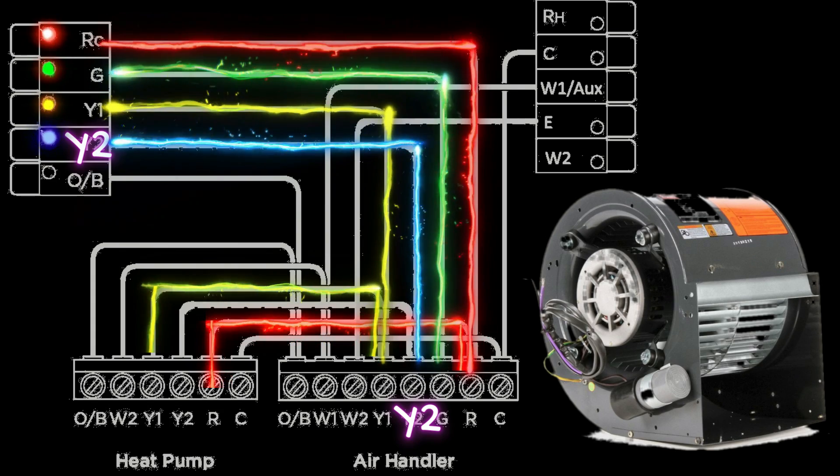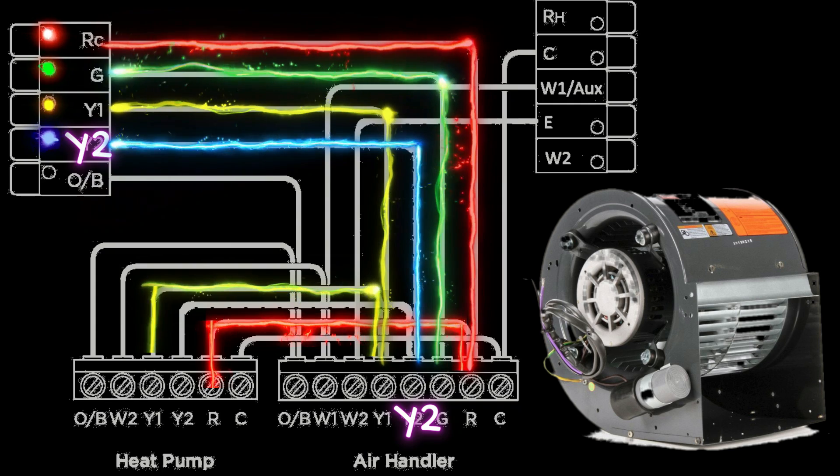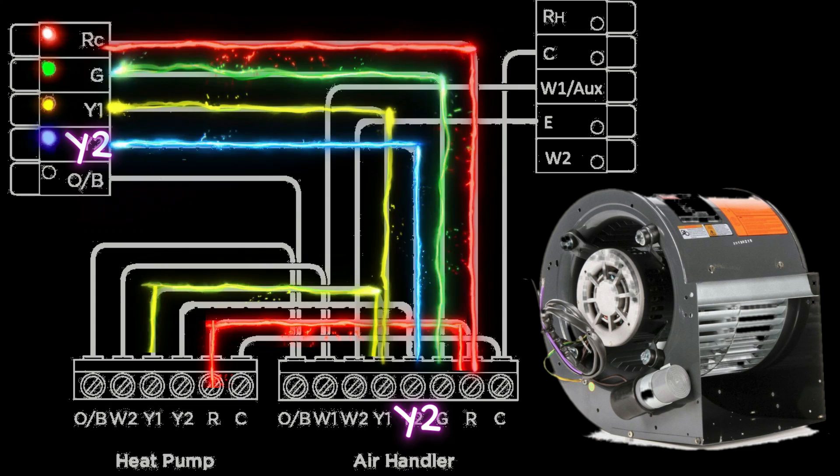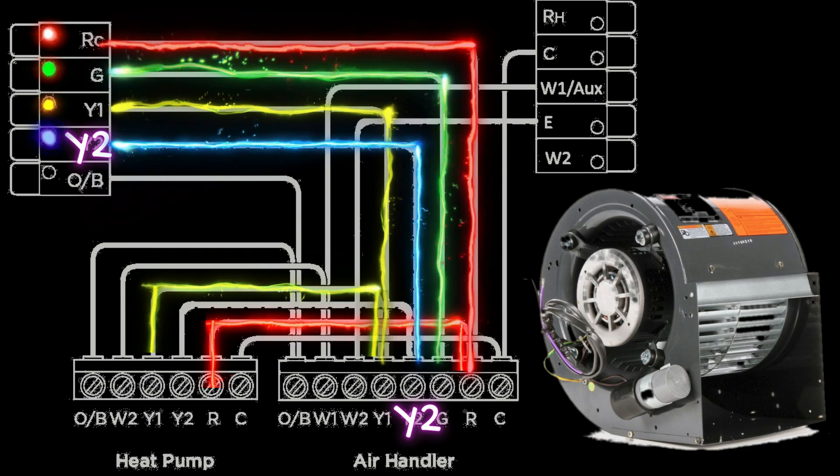And very similar to the Y1 terminal, this is going to initiate a different speed on the blower motor. So when the control board receives this signal on the Y2 terminal, it is going to kick the blower up into a higher speed or second stage.